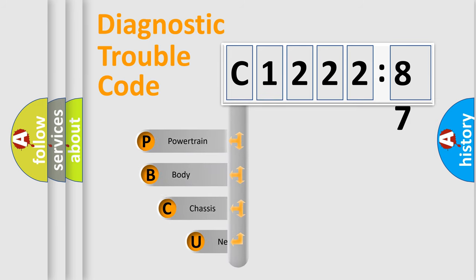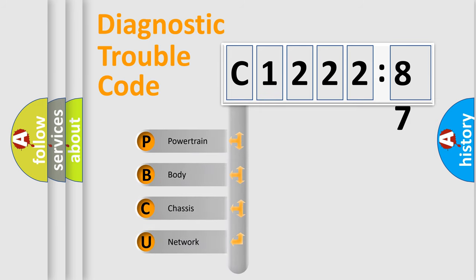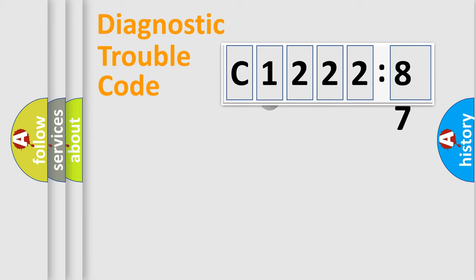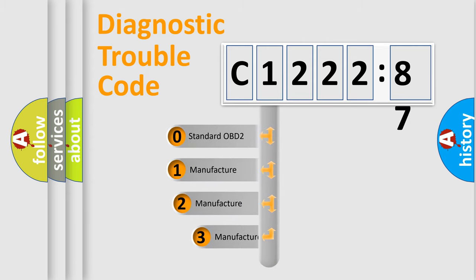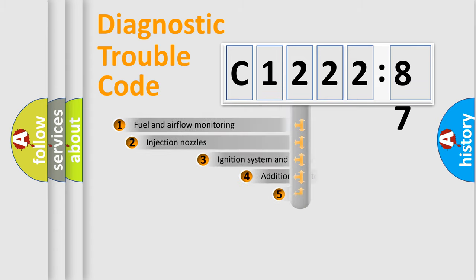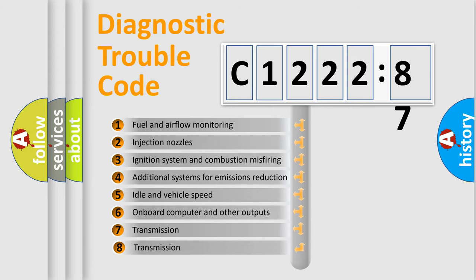First, let's look at the history of diagnostic fault code composition according to the OBD2 protocol, which is unified for all automakers since 2000. We divide the electric system of an automobile into four basic units: Powertrain, Body, Chassis, and Network. This distribution is defined in the first character of the code. If the second character is expressed as zero, it is a standardized error. In the case of numbers 1, 2, or 3, it is a more specific expression of a car-specific error.